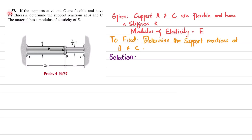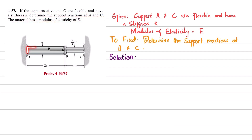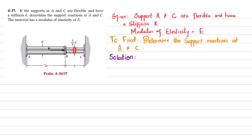Welcome back, problem 4-37. The statement is: if the supports at A and C are flexible and have a stiffness K, determine the support reactions at A and C. The material has modulus of elasticity E. There are two shafts joined together at point B, with a load P applied. The diameter of the first shaft is D, while the second shaft has diameter 3/4 times D. The length from A to B is 2A, and from B to C is small a.